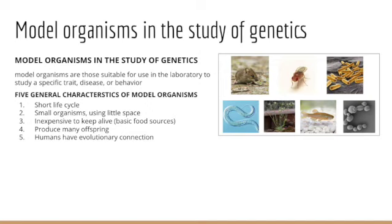We want model organisms to be able to produce many, many offspring. The ability to look at traits quantitatively is in part the ability to produce many offspring. When we look at Mendel, he looked at over 20,000 pea plants over that seven-year window — that's incredible. We can't use humans or large mammals to study some of these traits, so we need small organisms with short life cycles, taking up little space, very inexpensive to keep alive, and producing many offspring.